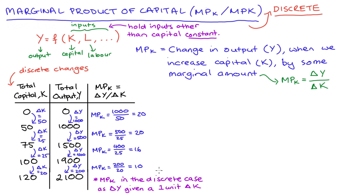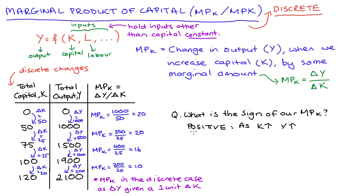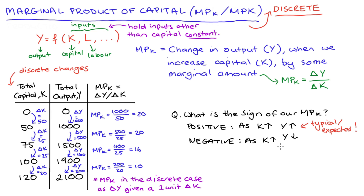There are two interesting questions we can ask about our marginal product of capital. The first concerns the sign. In my example, all the figures are positive, which makes perfect sense — a positive marginal product means that as we increase capital, we get more output, which is the natural and expected result. If we had a negative marginal product of capital, it would mean increasing capital is actually reducing total output. That would be less common and would require some specific reason, but it's possible.